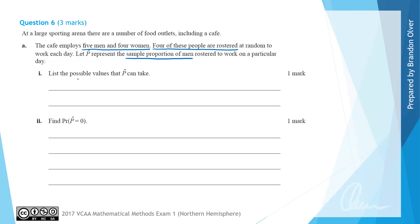For part one, we want to list the possible values P-hat can take. Because there are four people working at any given time, we could have zero men working, so the proportion could be zero. We could have one of the four people being a man, giving one-fourth. We could have two out of four which is a half, three out of four, or four out of four working men which would be a proportion of one. So these are the possible values that P-hat can take.